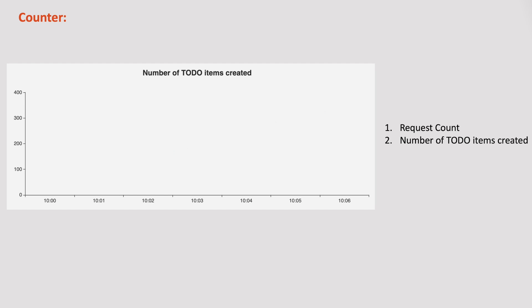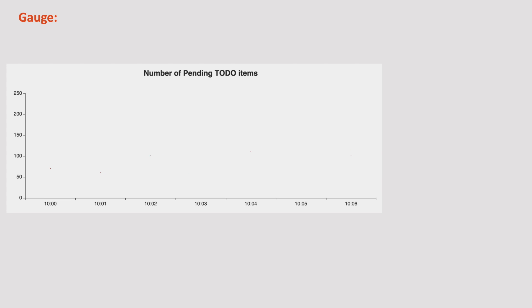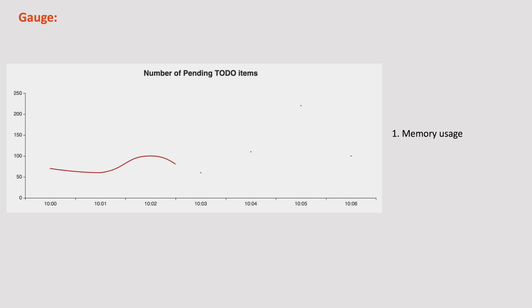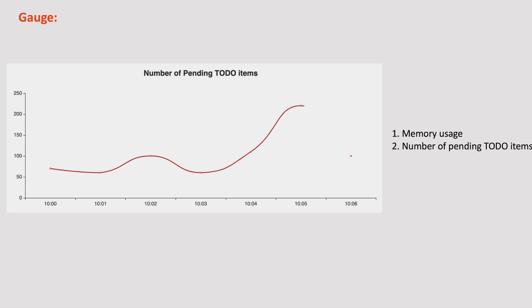The next type of metric is Gauge. A gauge is a metric that represents a single value that can increase or decrease over time. Examples of gauges include the memory usage of an application or the number of pending to-do items. So whenever we need a metric to be recorded and it may go up or down, then we should use gauge type.